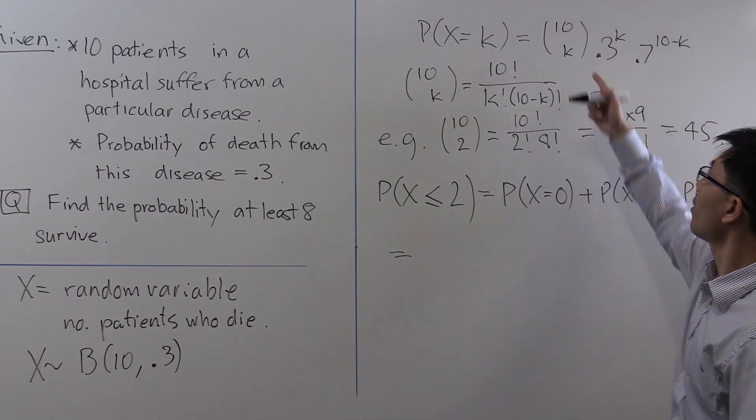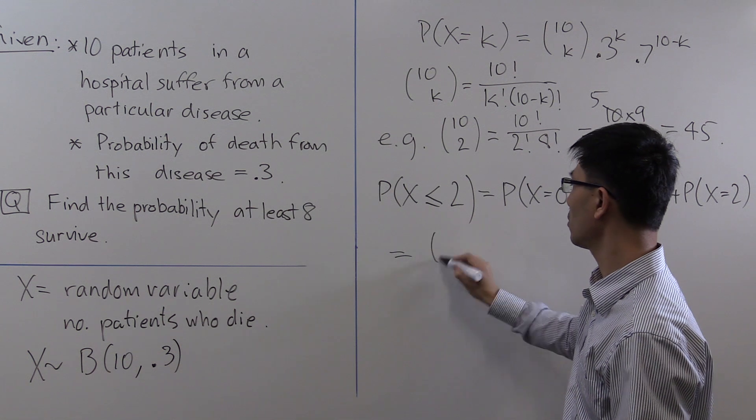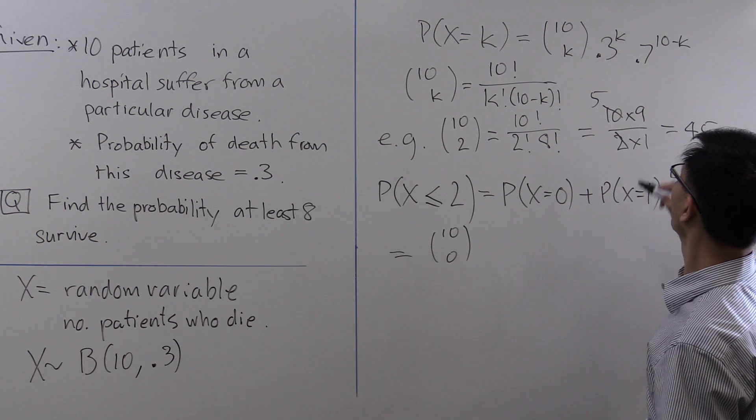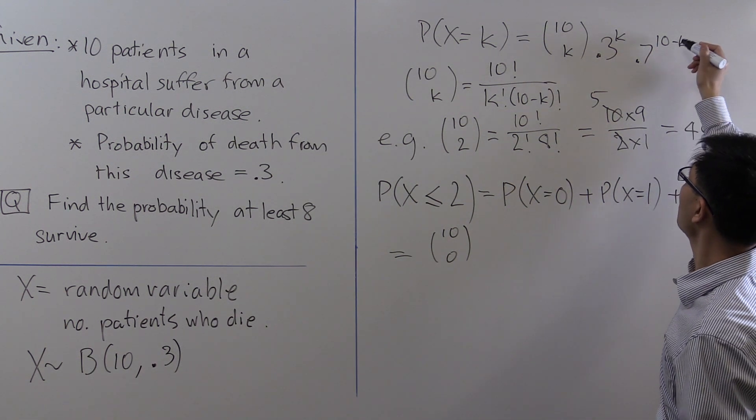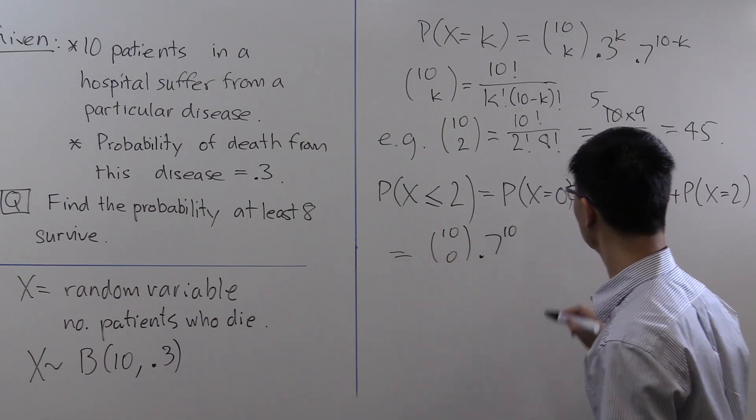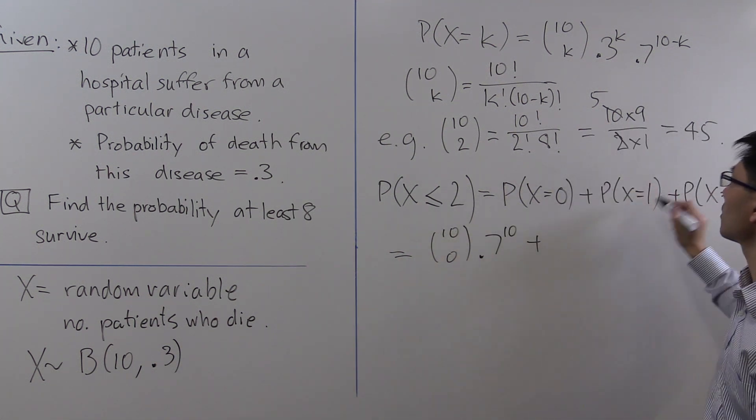k equals 0 gives 10 choose 0 times 0.3 to the 0, that's just 1, times 0.7 to the 10. Then you have to add the second summand, k equals 1,